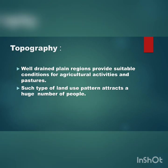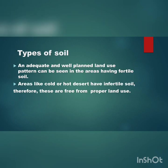Next is topography. Topography means the natural features of a land, especially the shape of the surface. Well-drained plains regions provide suitable conditions for agriculture activities and pasture. Such type of land use pattern attracts a huge number of people. Next is type of soil — an important factor that affects the land use pattern. A productive and well-planned land use pattern can be seen in areas having fertile soil. Areas like cold and hot deserts have infertile soil; therefore, these are free from proper land use.